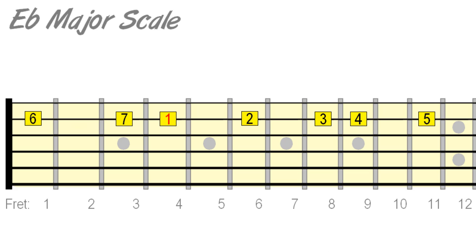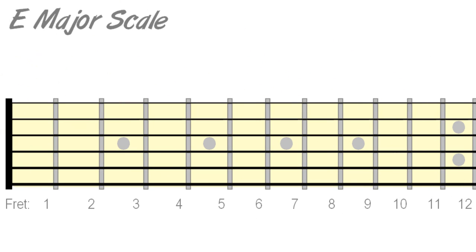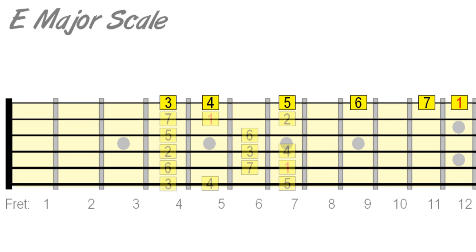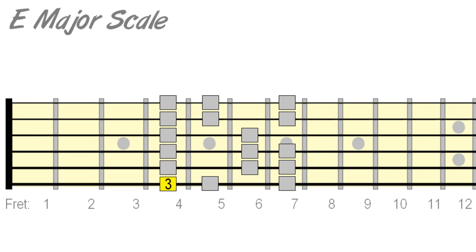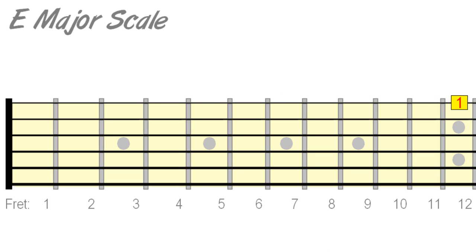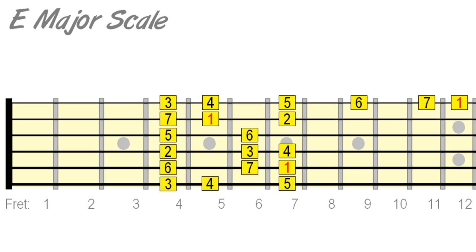As you practise this, be aware of how your position on the neck relates to different scale positions. For example, going back to E major, here I play down the E string to the 3rd position pattern for some vertical movement. It's called the 3rd position not because of the fret, but because the lowest note in the pattern is the 3rd tone of the scale.